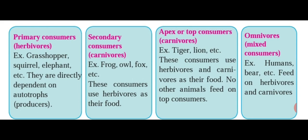On screen you can see the distribution of different consumers in our ecosystem. Primary consumers, also called herbivores — examples like grasshoppers, squirrels, and elephants — are directly dependent on producers. Secondary consumers, like frogs, owls, and foxes, use herbivores as their food. Then come apex or top consumers, which are carnivores and omnivores that eat only flesh. Carnivores can be identified by their sharp nails and pointed canine teeth, like tigers and lions. No other animal feeds on top consumers.